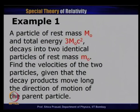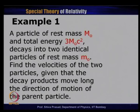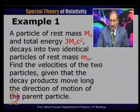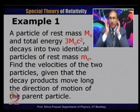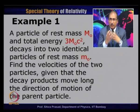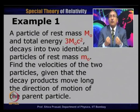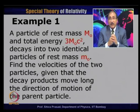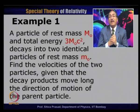Let us look at a particular problem. There is a particle of rest mass M₀ which has a total energy of 3M₀c². The total relativistic energy includes rest mass energy, so total energy — kinetic energy plus rest mass energy — is 3M₀c². This particle decays into two identical particles, each with a rest mass of m₀. We need to find the velocities of the two particles given that the decay products move along the direction of motion of the parent particle.